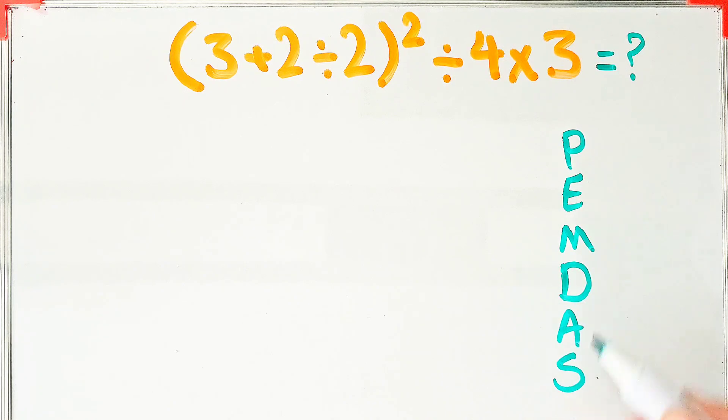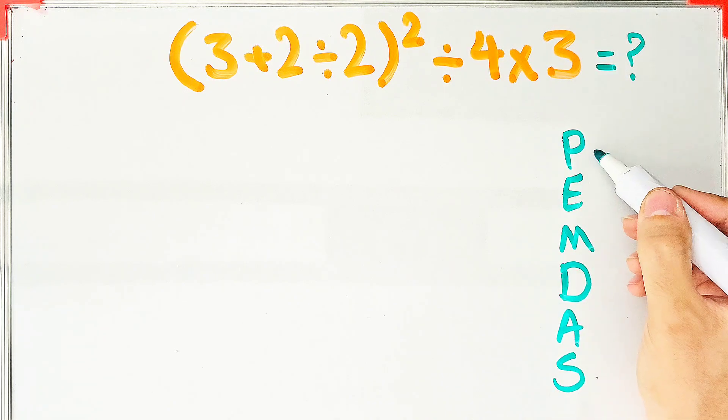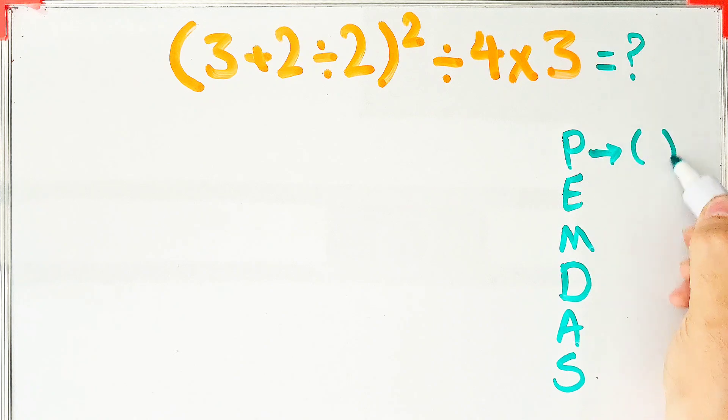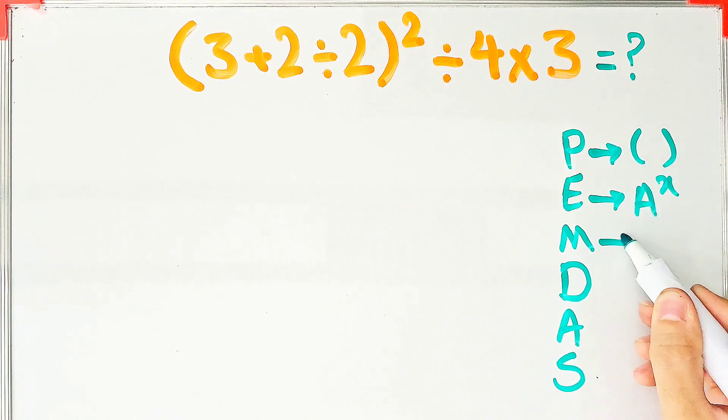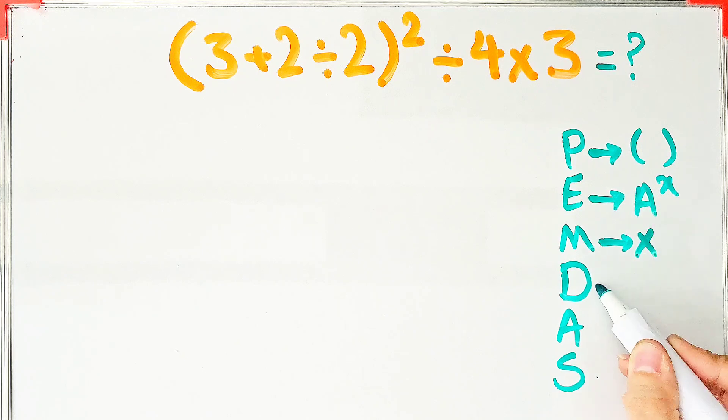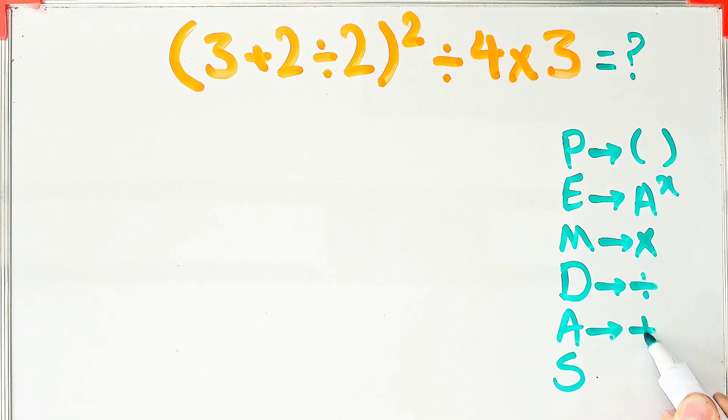In this rule, P stands for parentheses, E stands for exponent, M stands for multiplication, D stands for division, A stands for addition, and S stands for subtraction. According to this rule, first we simplify the parentheses.